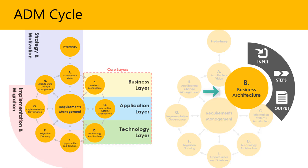Looking at the right-side diagram, during application of the ADM process, a number of outputs are produced based on inputs and steps according to the phase objective. These outputs could include process flows, product plans, architectural requirements, and so on. ADM input and output deliverables are suggestions and need not be followed exactly, but each deliverable produced should be versioned to indicate when a change has occurred.